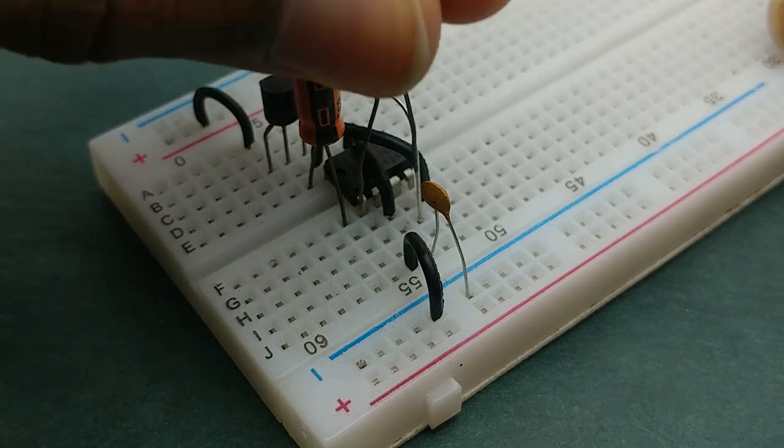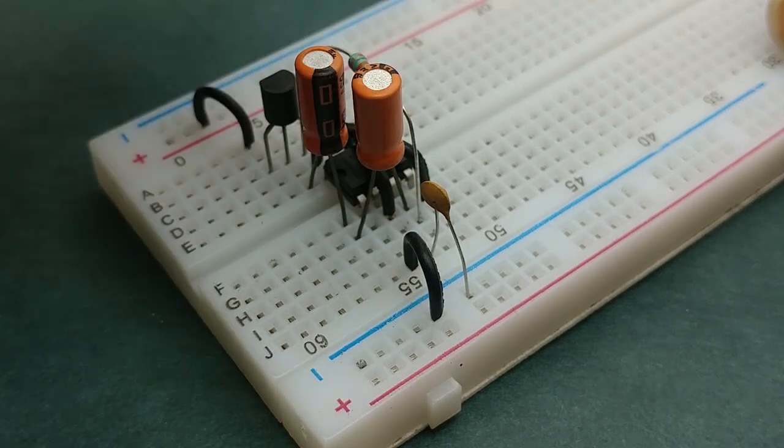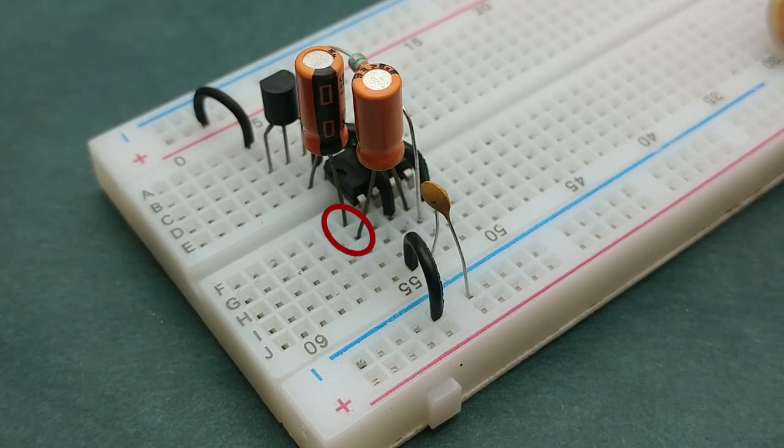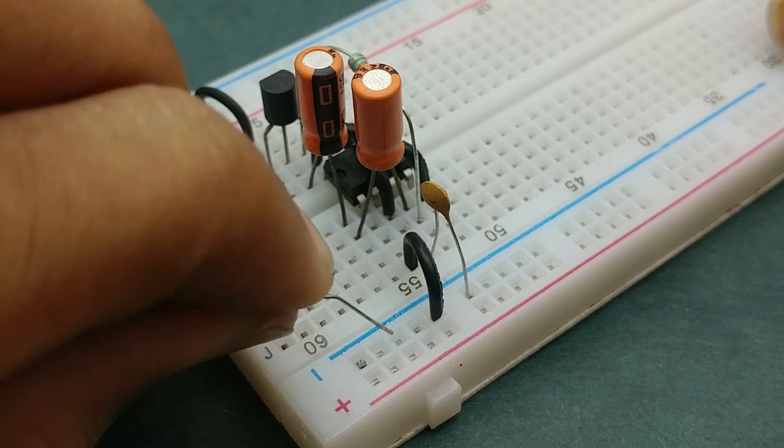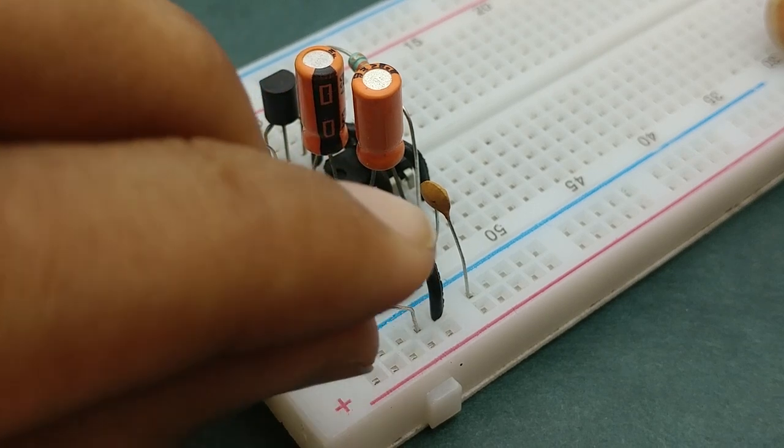Next place another 10 microfarad capacitor such that its positive terminal is connected to negative terminal of the previous capacitor and its negative terminal is connected to pin 3 of the triple fire timer IC. Next place a 100 kilo ohm resistor between base of the transistor and the negative rail.